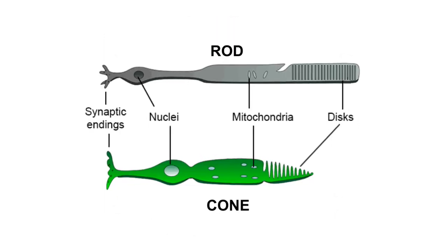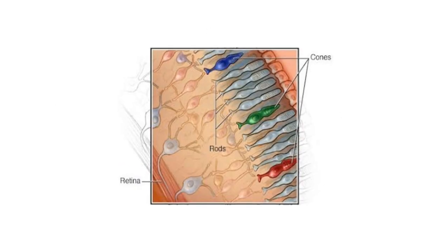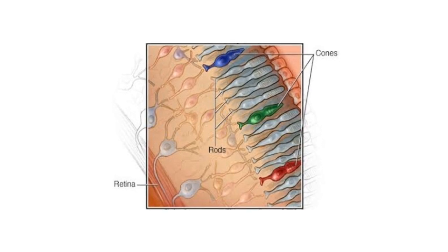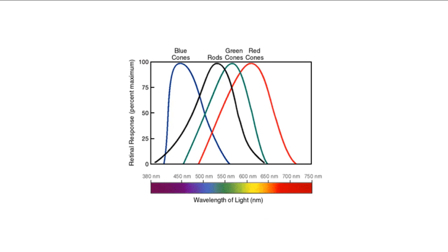There are two types of these specialised cells, rods and cones. Cones are most sensitive to one of three different colours, green, red and blue. They account for the first three adaptations of Holonic construction.